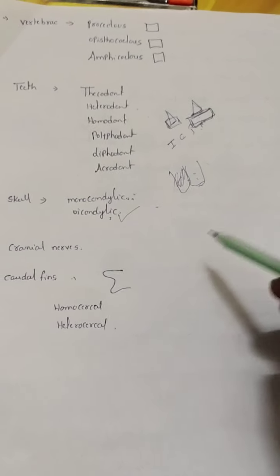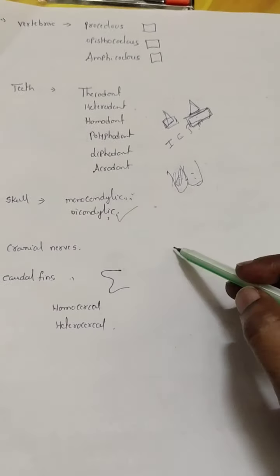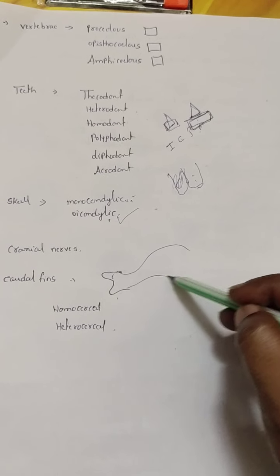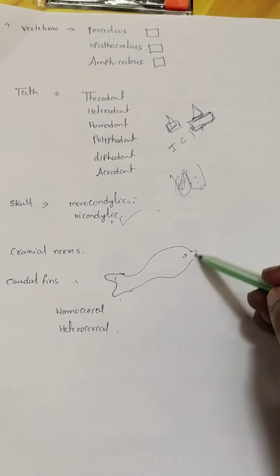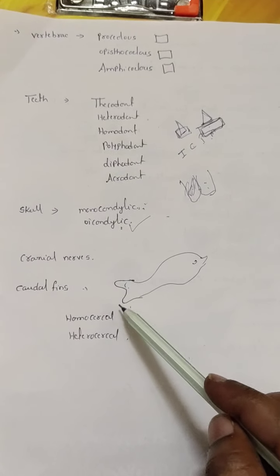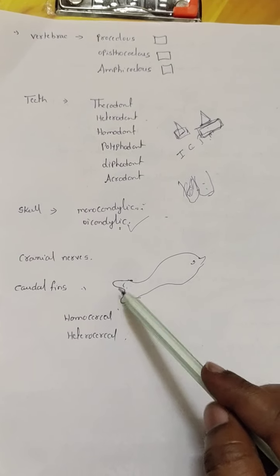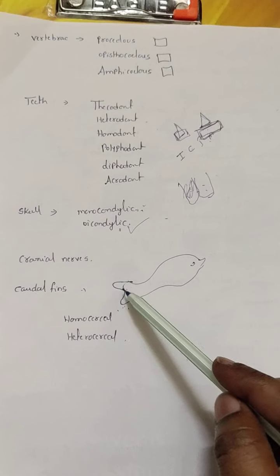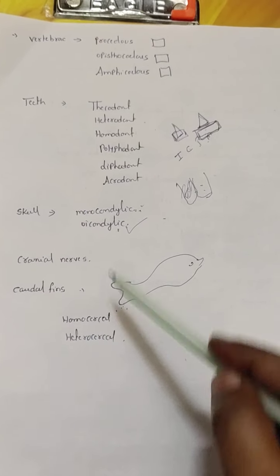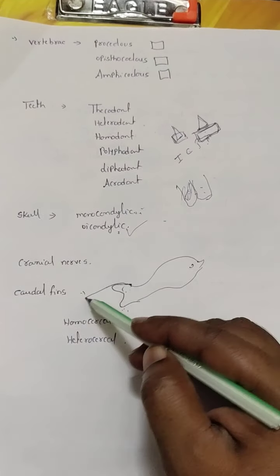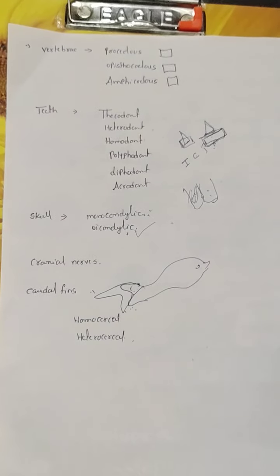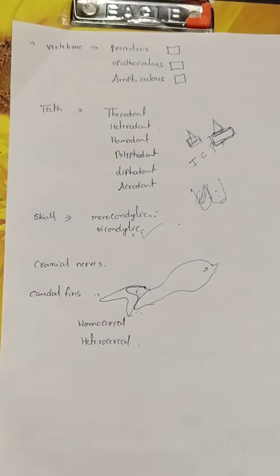Regarding caudal fins in fish, the tail fin at the back is called the caudal fin. When the caudal fin is equal on both sides, it is called a homocercal caudal fin. When the caudal fin is unequal, it is called a heterocercal caudal fin.